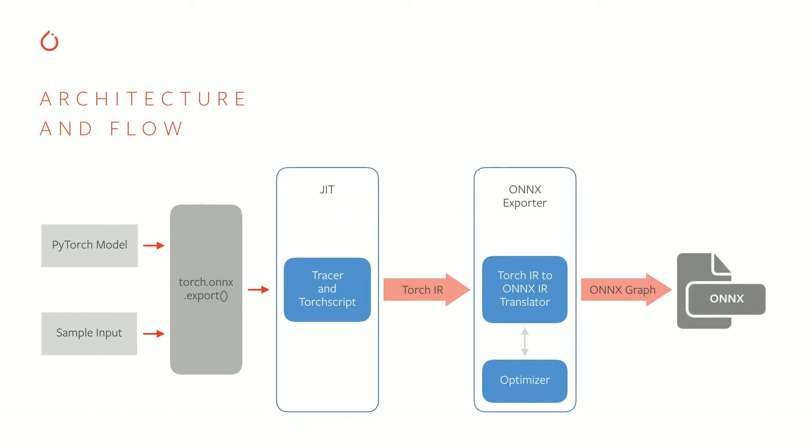This is mainly where we have been contributing in the exporter. In this layer, we use the Torch IR resulting from the JIT trace and translate it into an ONNX IR, to which we apply some optimizations to finally get the ONNX file.